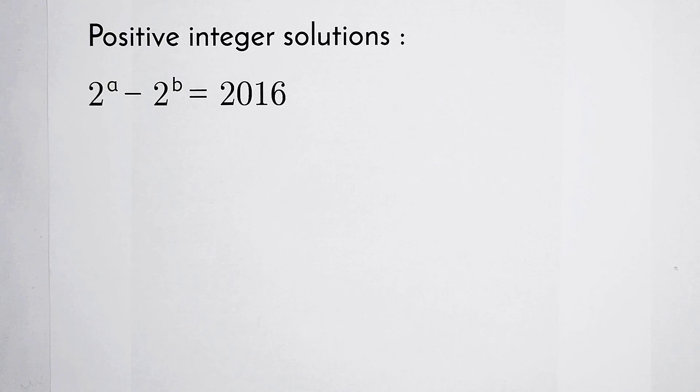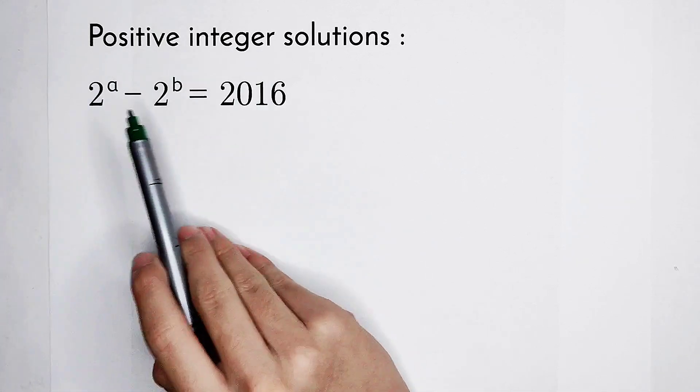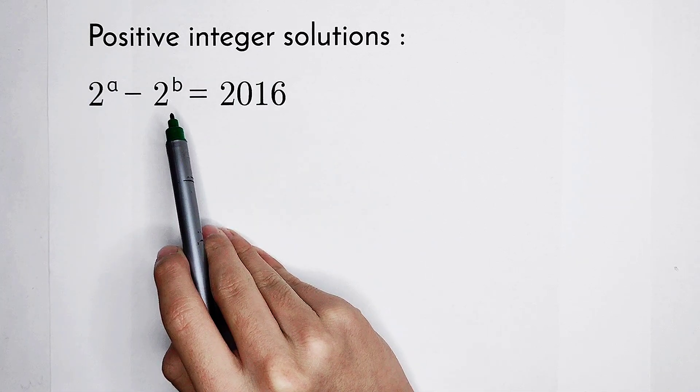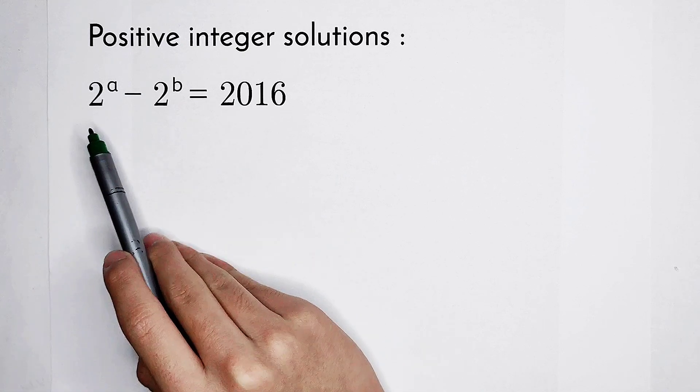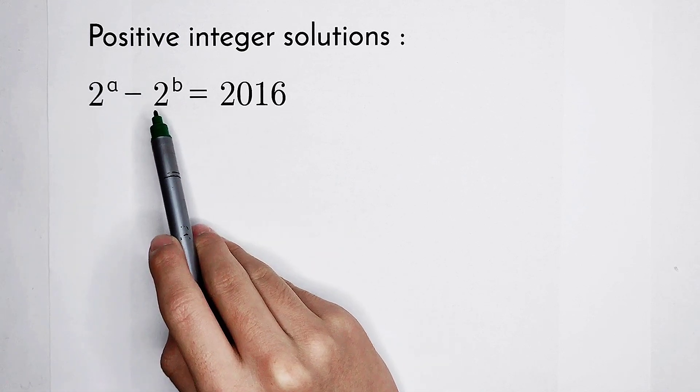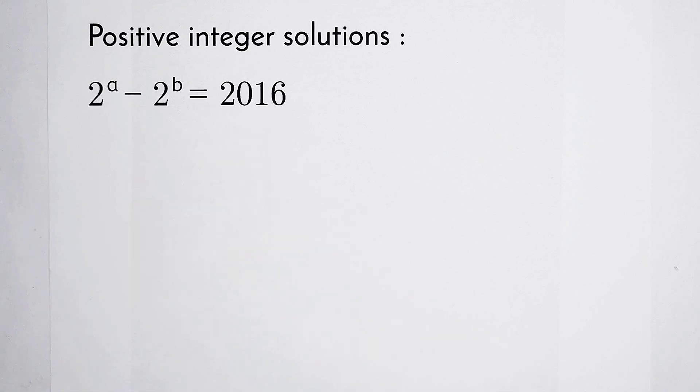Welcome back to Math Winnow. Find the positive integers A and B such that 2 to the power of A minus 2 to the power of B is equal to 2016.